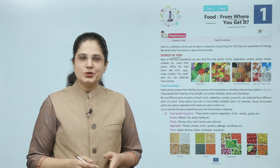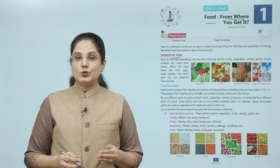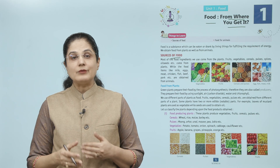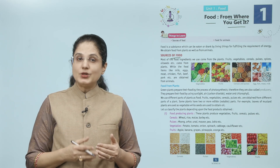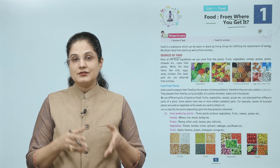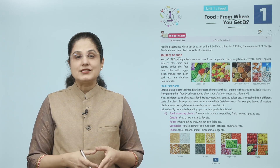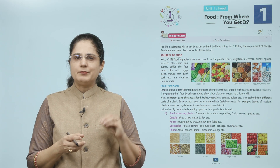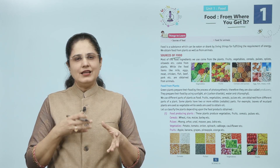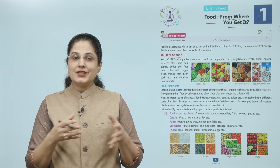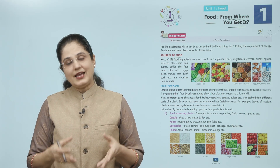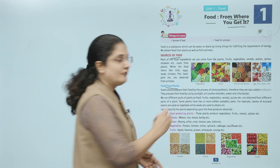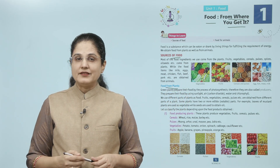Most of the food ingredients we use come from plants — fruits, vegetables, cereals, pulses, spices, oil seeds, etc. come from plants. While food items like milk, eggs, meat, chicken, fish, beef, pork, etc. are obtained from animals. Zyada tar khana hume plants se milta hai jisme phal, sabziyaan, dalen ye sab cheezein hain, aur doodh, eggs, meat, chicken waghera hume animals se milta hai.